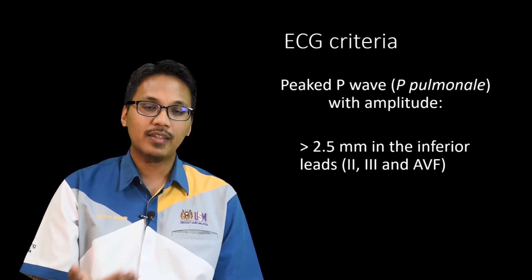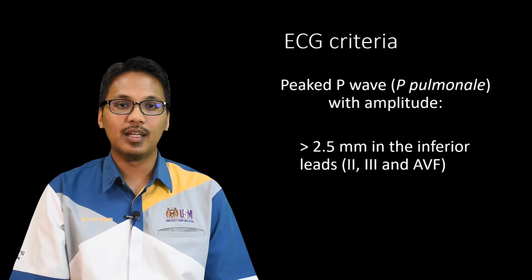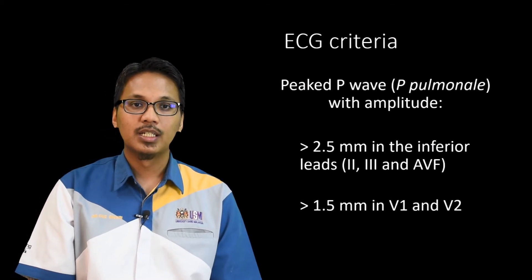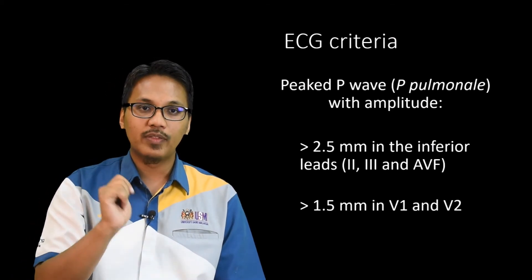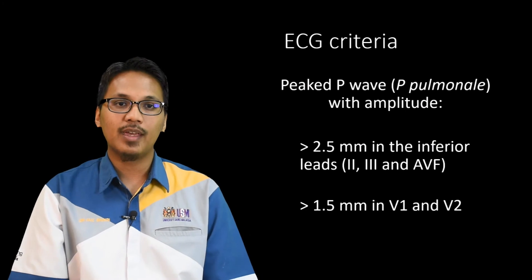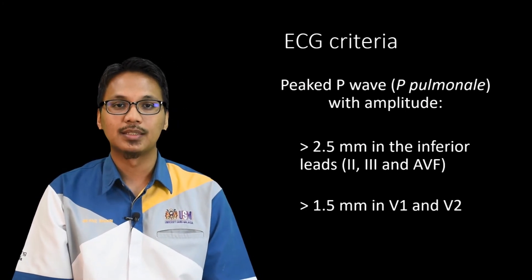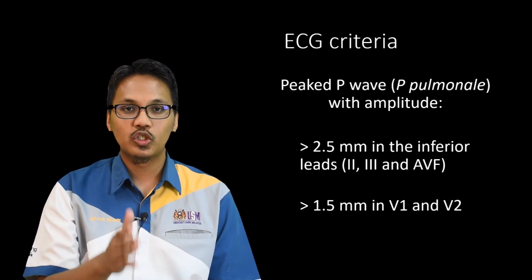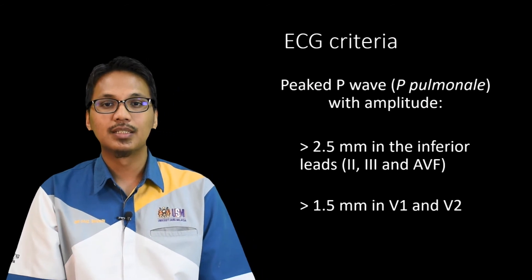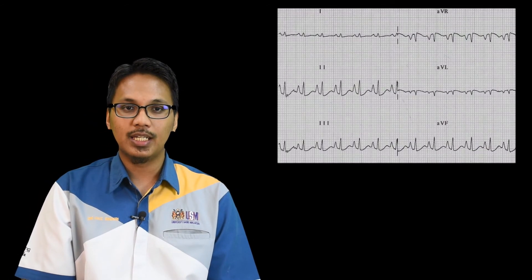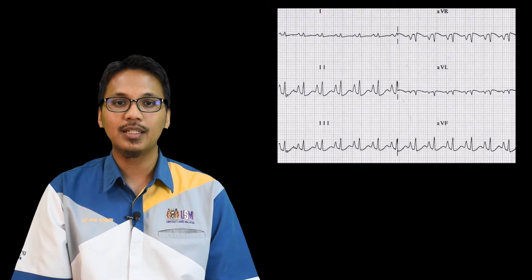The second criterion is when looking at leads V1 and V2, the amplitude of the P-wave is at least more than 1.5 mm. Here is an example ECG from a patient with P-Pulmonale.